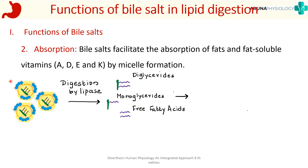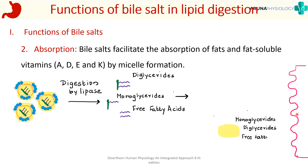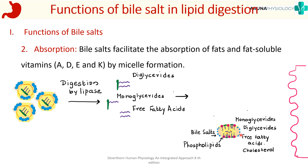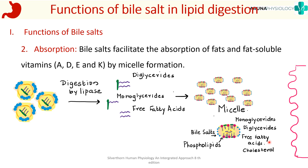The next step is to absorb these products of digestion across the brush border epithelium, but they need to be transported across it. Here again we need the help of bile salts. Bile salts form a water-soluble complex with these products of digestion, also stabilized by phospholipids. These complexes containing the products of digestion, bile salts, and phospholipids are called micelles.